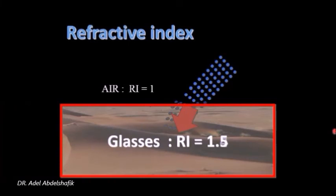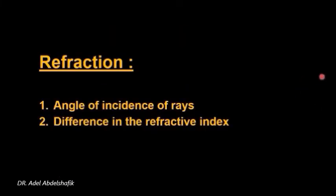Another type of glass has a refractive index of 1.5. So when the same rays are passing into glass 1.4 or 1.5 the amount of bend will be different because the resistance is different. So refraction depends on two factors: the angle of incidence of rays and the difference in refraction between the two media.